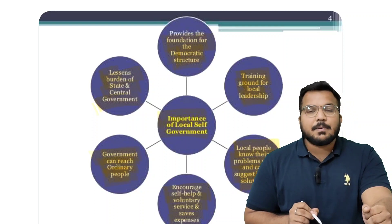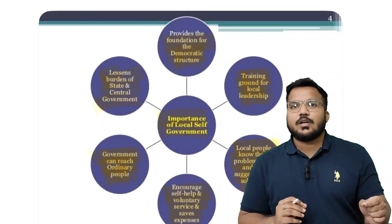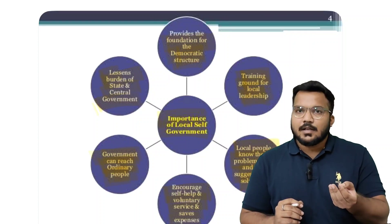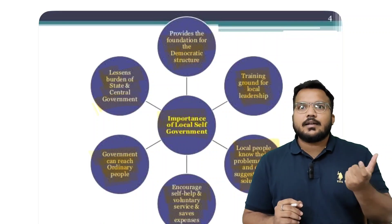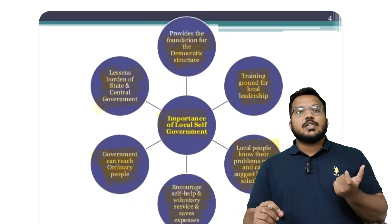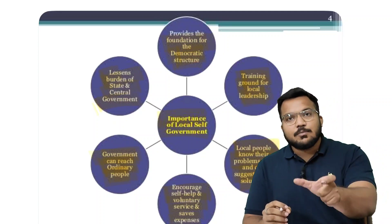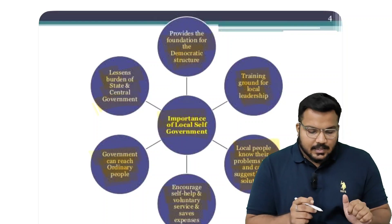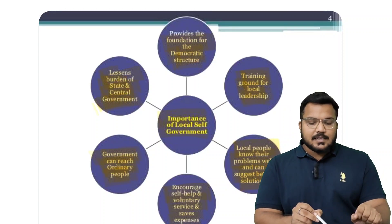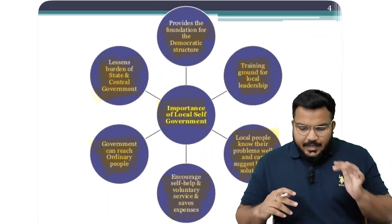Self-help and voluntary services — government can reach ordinary people. MP, MLA, Collector के लिए हर दिन सबसे नीचे level के हर आदमी की बात सुनना possible नहीं है। एक MP के पीछे 15-18 लाख लोग, एक MLA के पीछे 8-10 लाख, एक Collector के पीछे 3-4 लाख लोग होते हैं। इसीलिए local self-governance ज़रूरी है — India में democracy establish करनी है। अब देखते हैं post-independence में इन सब चीज़ों को achieve करने के लिए कौन-कौन सी committees बनीं।